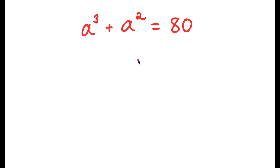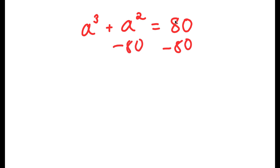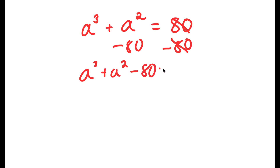So in this problem, I have a to the power of 3 plus a squared is equal to 80. To solve this, I'm going to first start by subtracting 80 on both sides. So I get a to the power of 3 plus a squared minus 80 is equal to 0.